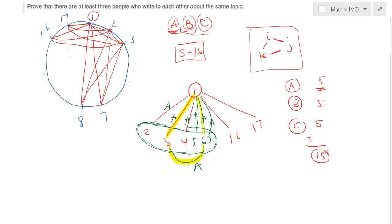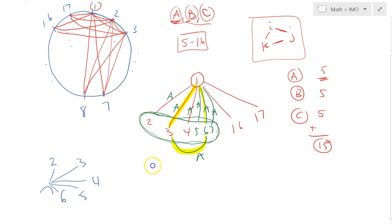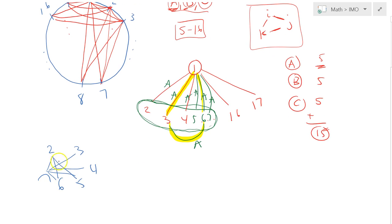So therefore, the consequence is that people 2, 3, 4, 5, 6 and 7, on their correspondences, they do not talk about topic A. They only talk about topic B and C. Does that make sense? So all these correspondences, they only talk about topic B and C.